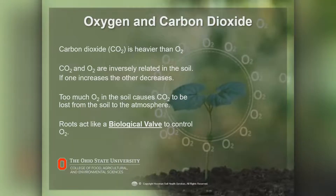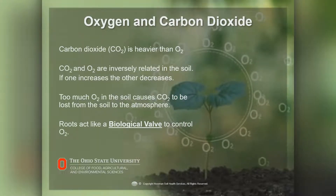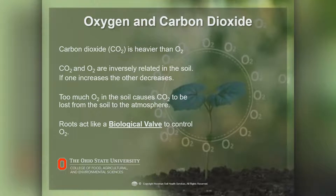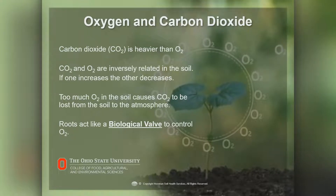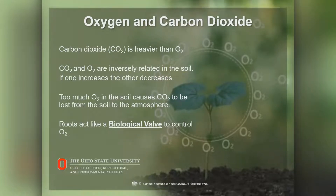In the soil, there's a relationship between oxygen and carbon dioxide — they're inversely related. When we open soil up by tillage and put in all the oxygen, the carbon dioxide escapes into the atmosphere. If we get too much oxygen in the soil, it causes carbon dioxide to be lost from the soil. Roots act like a biological valve to control how much oxygen gets in and how much carbon stays in the soil; the majority of the carbon dioxide in soil comes from root respiration.